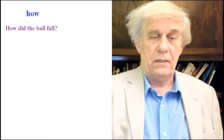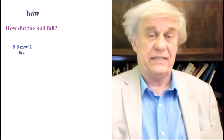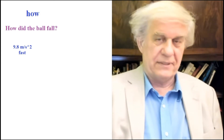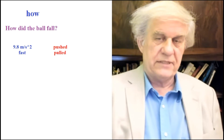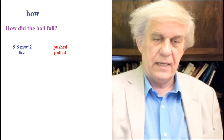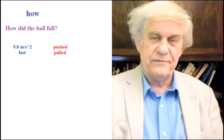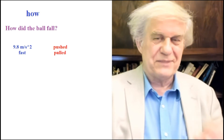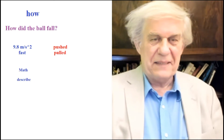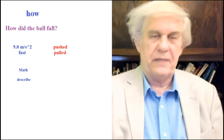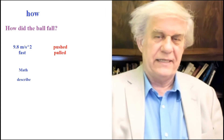If someone asks 'how did the ball fall,' there are a couple of answers. You can say it fell at 9.8 meters per second squared, or just 'it fell fast.' But maybe he was asking something else — whether it was pushed or pulled, or asking for a mechanism. These words have two senses, two meanings, two types of understanding, so you have to specify exactly what you want answered.